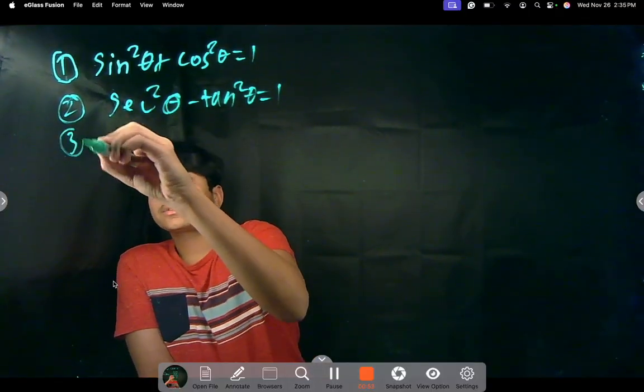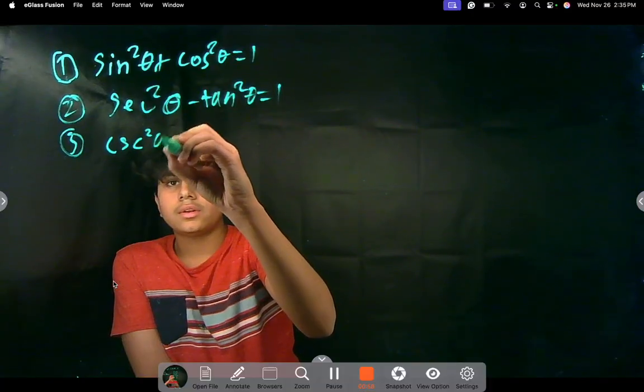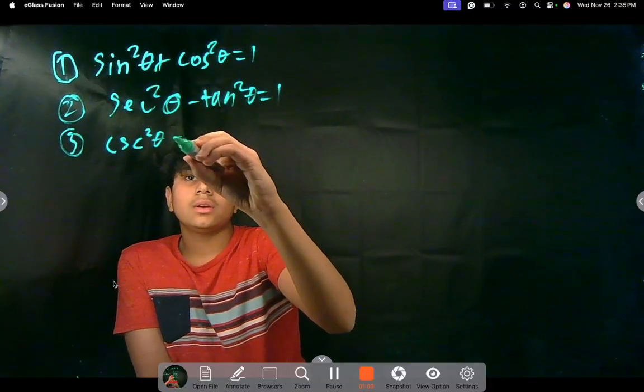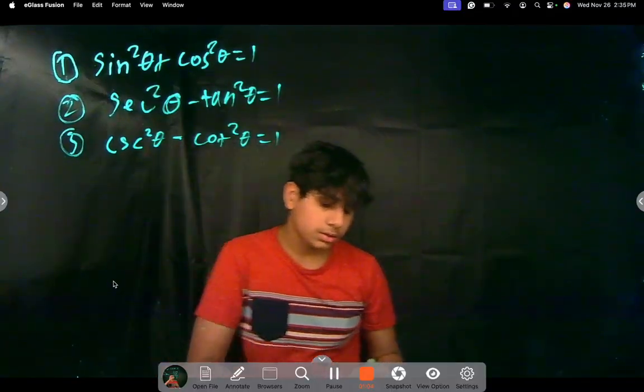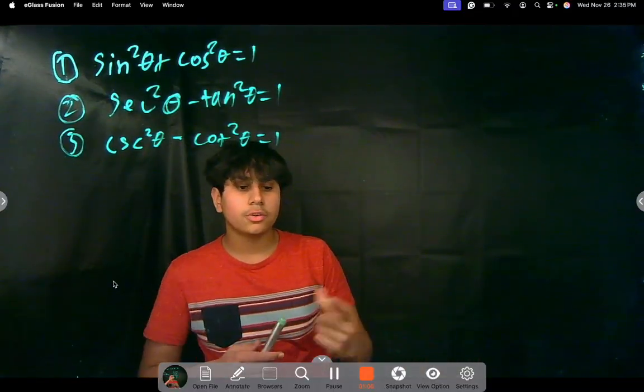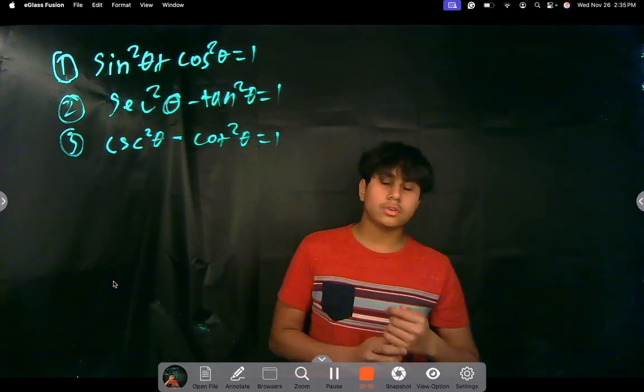And the third one is that cosecant squared theta minus cotangent squared theta is equal to one. So these are important squared formulas that you should definitely remember, which will help you simplify a lot of equations.